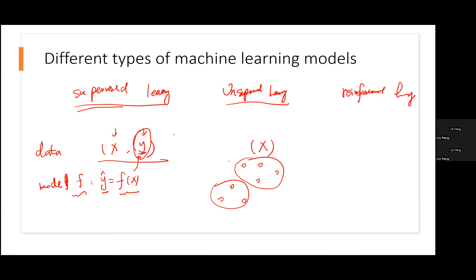There is no Y here — no supervision. However, if we know how X is being generated, if we know the underlying distribution for X, then the problem is solved. If we know how X is being generated, we can do a lot of things, including prediction. Unsupervised learning is more difficult, but once we can do it well, we can easily do other downstream tasks.